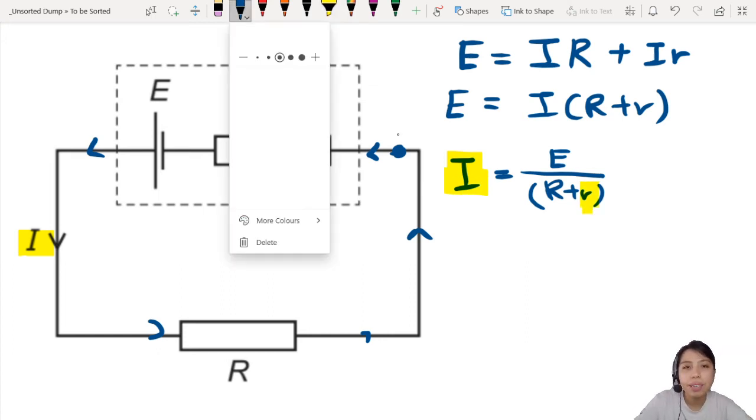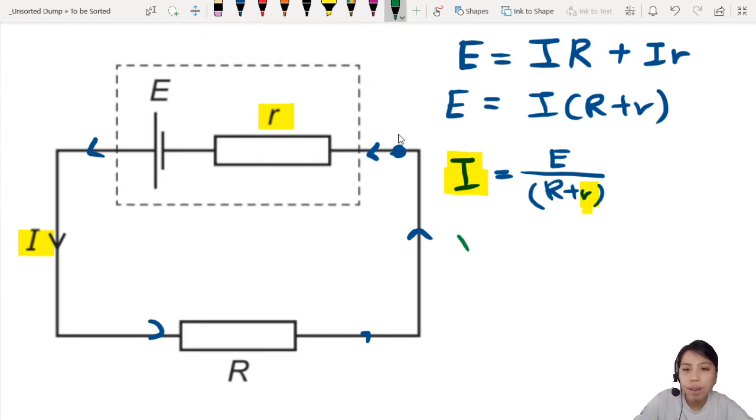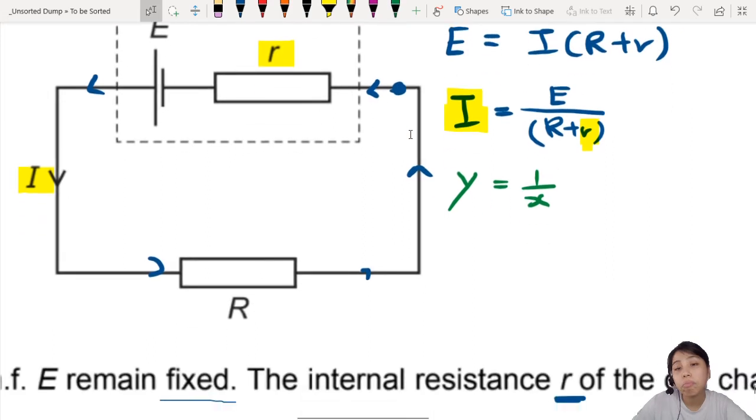So this is similar to the pattern of the graph or function, which is something like this, 1 over x. Okay, so how does the 1 over x graph look like? Well, we've got the asymptotes here. Normally, it looks like this. I won't draw the negative part there, but don't worry about the negative part.